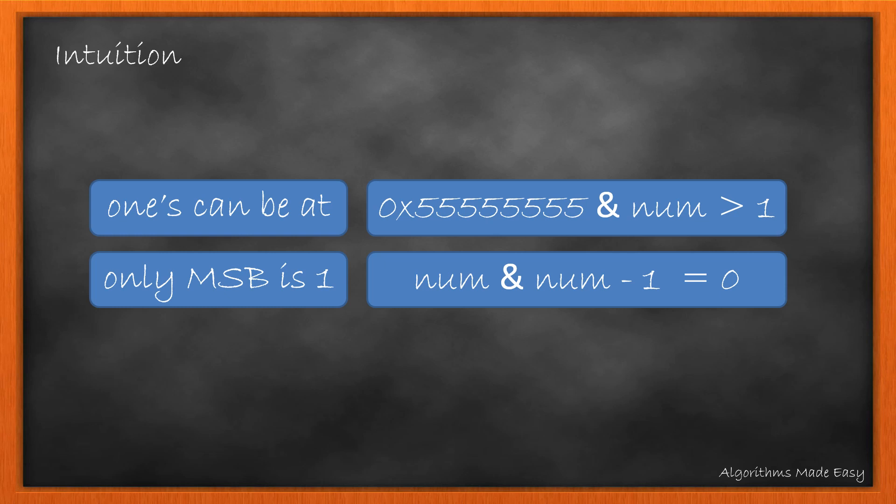Also, we can only have one set bit which can be found by performing an AND operation of number with number minus 1. We have seen this while solving power of 2 problem. You can check out the detailed explanation behind this condition in that video. The link to it is in the top.